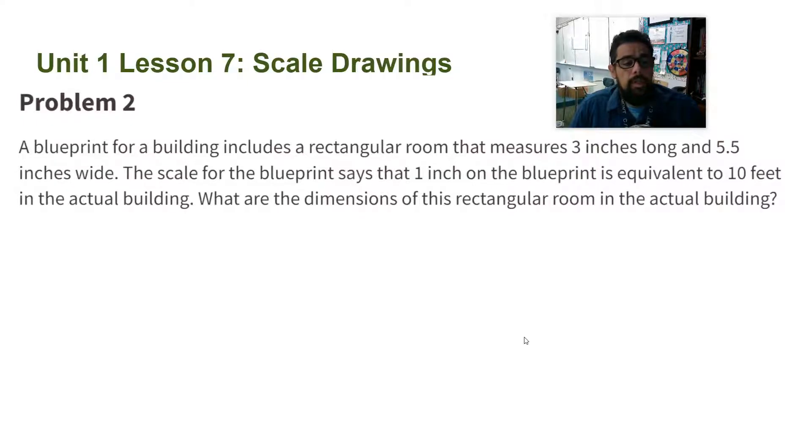A blueprint for a building includes a rectangular room that measures three inches long and five and a half inches wide. The scale for the blueprint says that one inch on the blueprint is equivalent to 10 feet in the actual building. What are the dimensions of this rectangular room in the actual building?